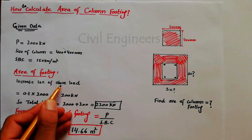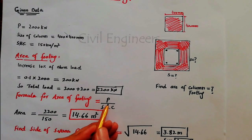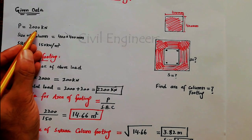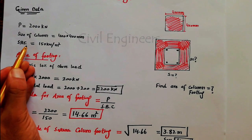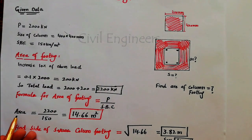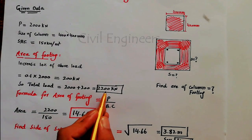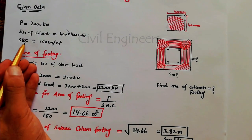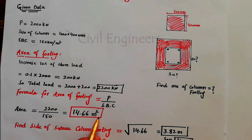Now we will find the area of footing for the total load of 2200 kN. The formula for area of footing is: Area = P divided by SBC. Here P is 2200 kilonewtons and SBC is 150 kilonewtons per meter square. So area of footing equals 2200 divided by 150, which gives us 14.66 meter square.